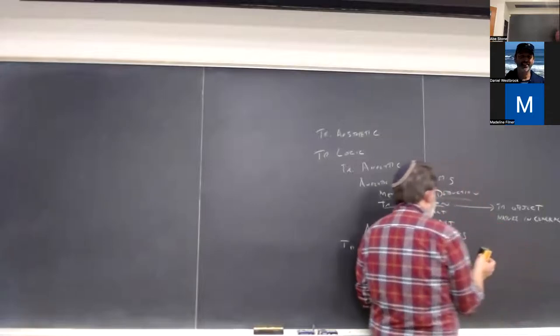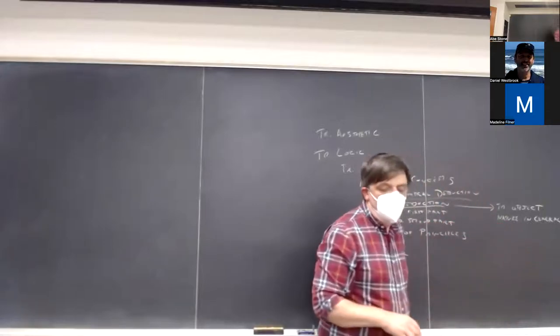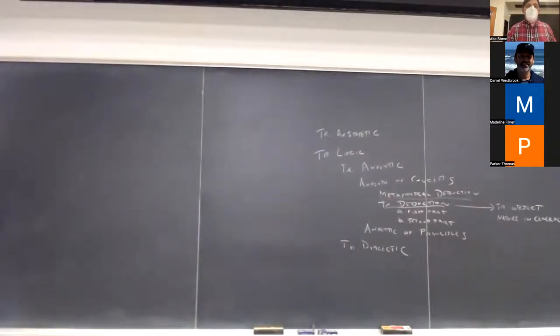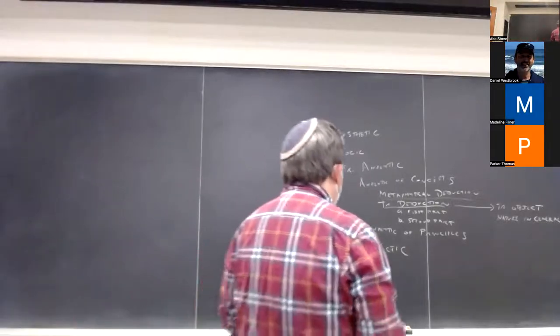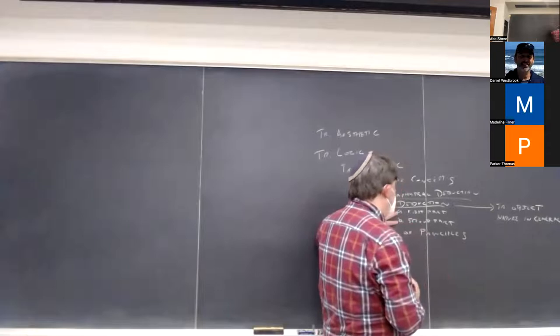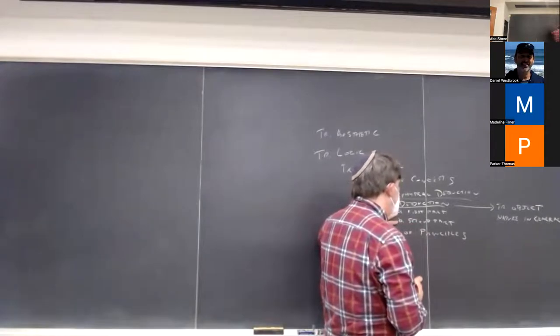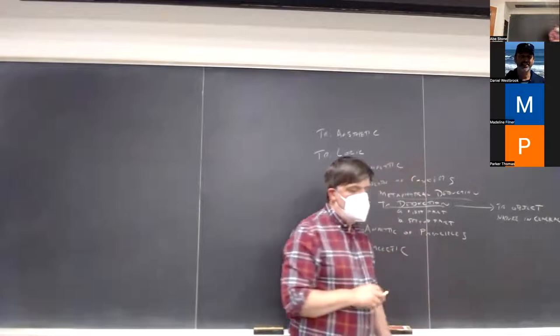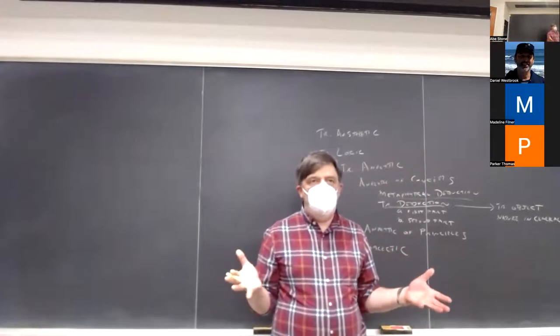We're trying to show that there is something. The division between these two parts seems to be that in the first part, he shows that there is something without assuming anything in particular about what our form of sensible intuition is.